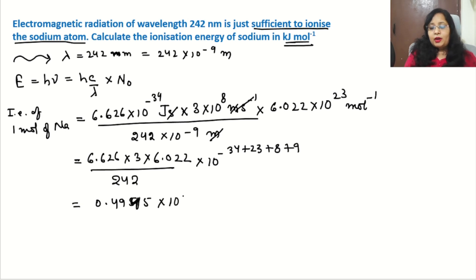Now after doing all the calculation, we get the value 0.4945 into 10 to the power... First we will do the addition: 23 plus 8 plus 9 becomes plus 40, and minus 34, it becomes plus 6. So we can write the power 10 to the power 6, and the unit is joule per mole.